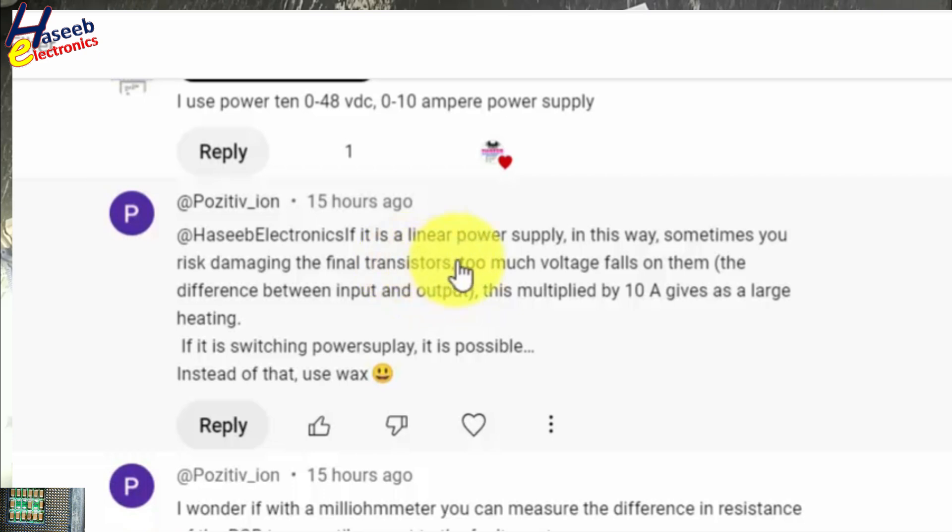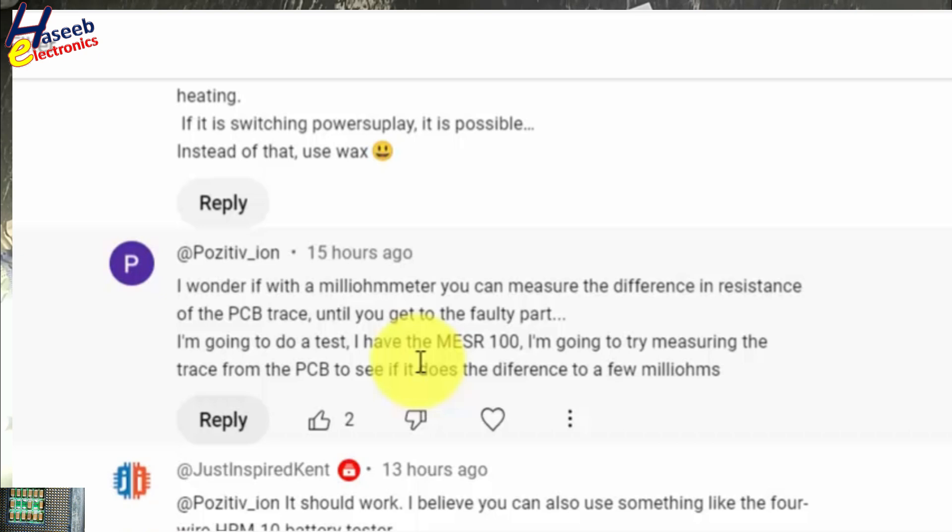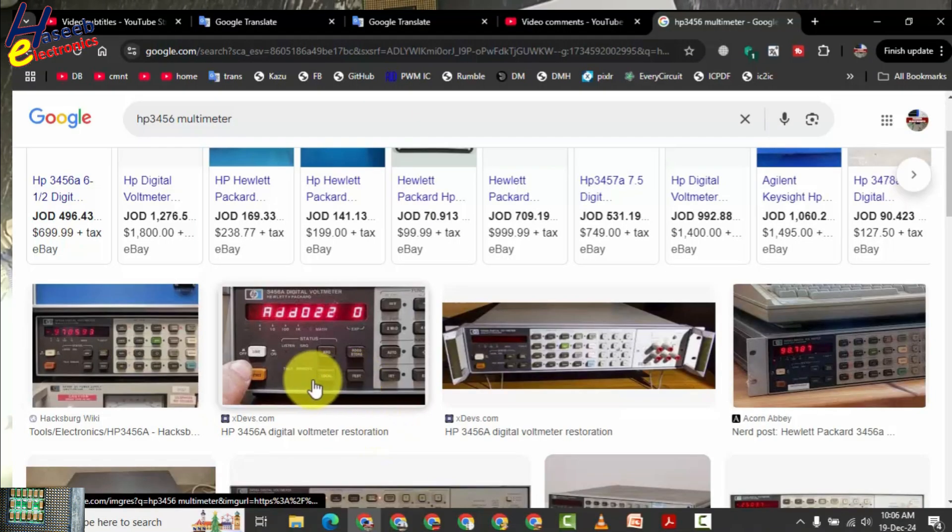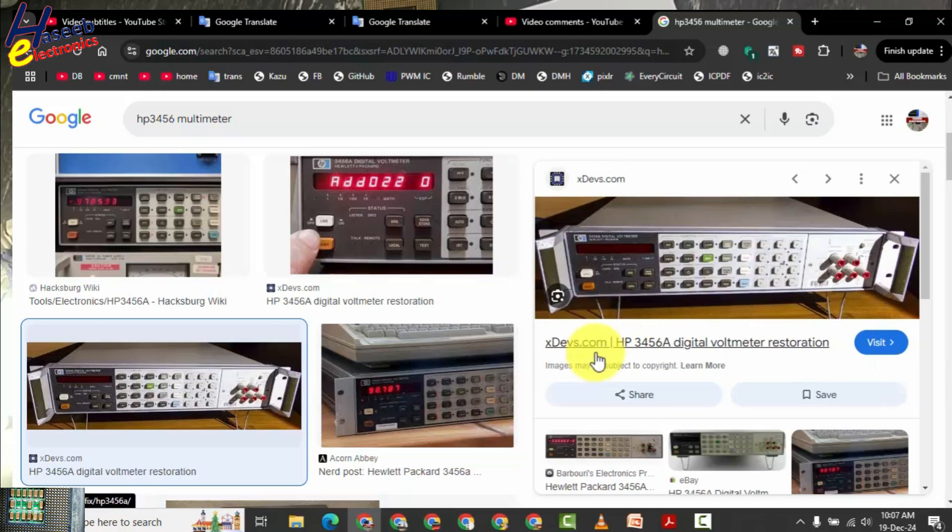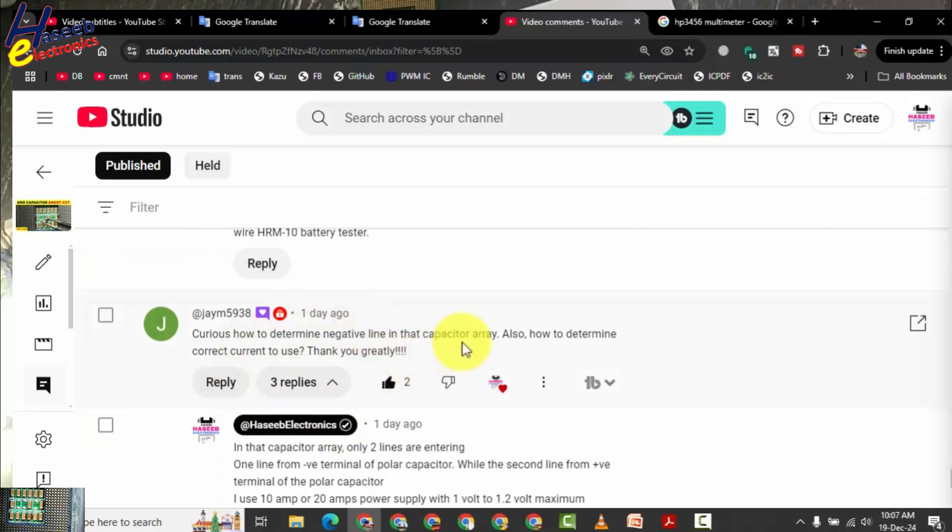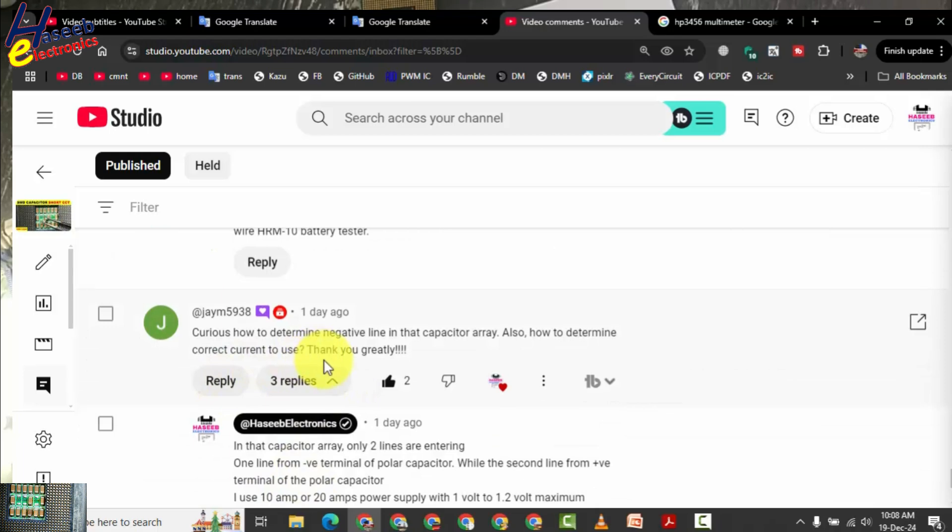We need linear power supplies. If you have good quality power supplies, that time very rarely these power supplies will damage because those are capable to deliver the current. If you have micro-voltmeter, HP 3456 meter, these are also excellent to determine the short circuit. These will measure in microvolts. Four-wire system, how to determine negative and positive, also how to determine current to use. Thank you.